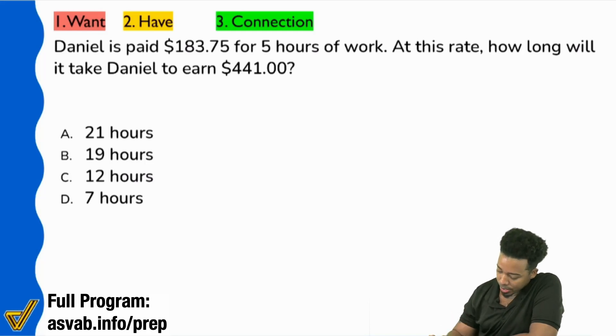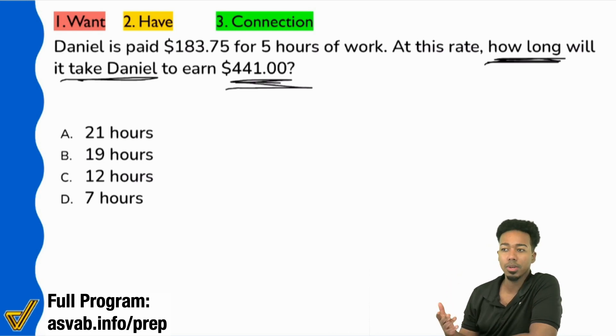So what we're looking for is how long it'll take Daniel to earn the $441. The how long - can you agree that the how long is hours? Because if you look at the choices, all of the choices say hours. We're looking for the number of hours. I think we can start there nice and smooth. We're looking for blank hours.